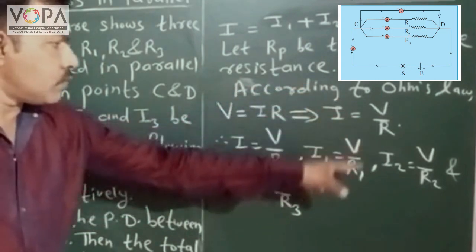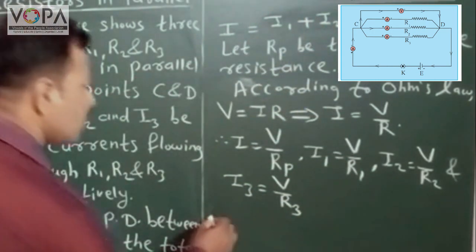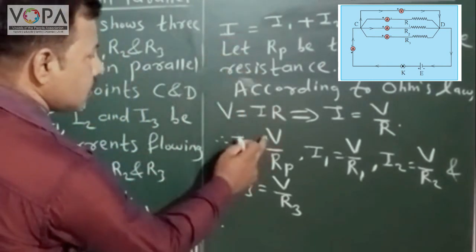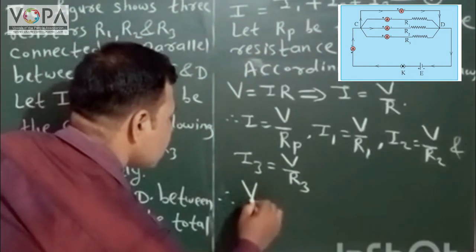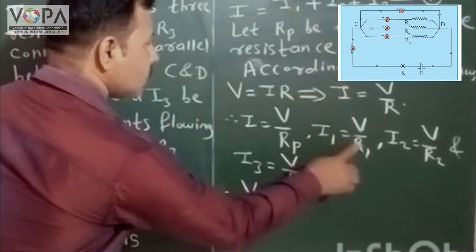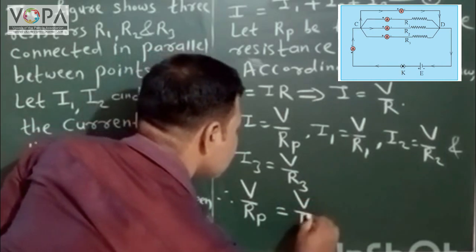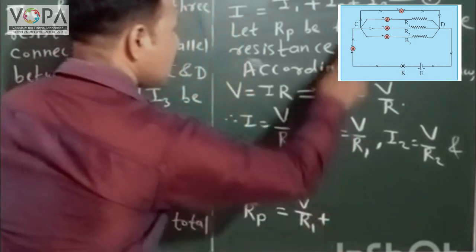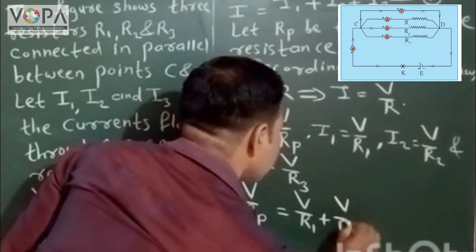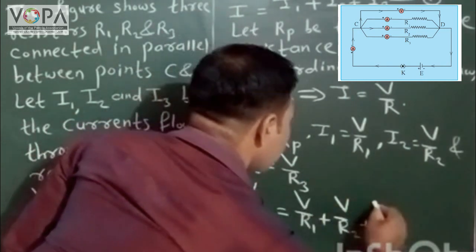Substituting all these values in equation number 1, we get: V / Rp = V / R1 + V / R2 + V / R3.